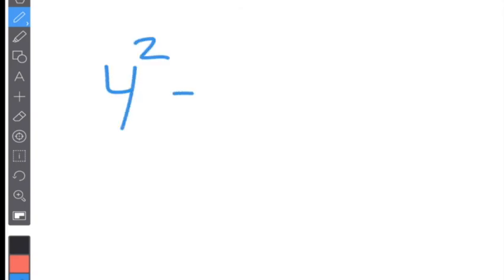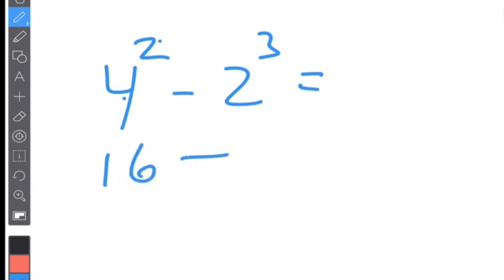Make sure you know cubes and squares. For example, if I have four squared minus two cubed: four squared is four times four, not four times two — that's 16. Two cubed is two times two times two, which is eight. So 16 minus eight is eight. If you understand how to do all that, you're going to be fine. Plus, since this is our first quiz, I'm going to have open notes, so you'll be able to look at your notes.